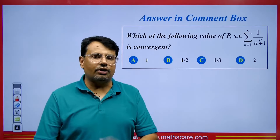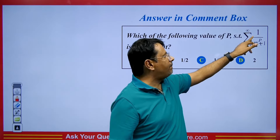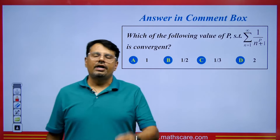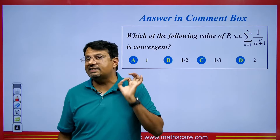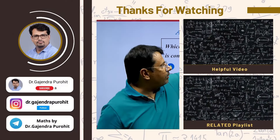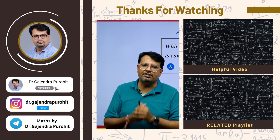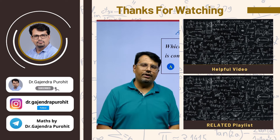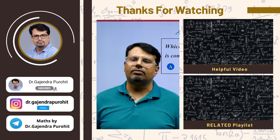This is for the comment box: summation n equals 1 to infinity of 1 upon n to the power (p plus 1) — for what value of p will it be convergent? Please tell me in the comments how long you took to solve it. For more videos like this, go to the entire playlist. If you are preparing for CSIR NET, GATE, or IIT JAM exams and want to improve your short tricks, watch my videos here and subscribe to the channel. Thank you everyone, bye-bye.